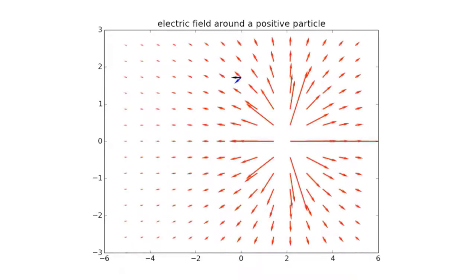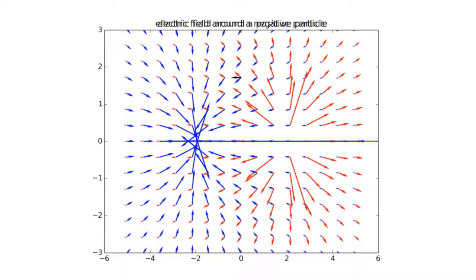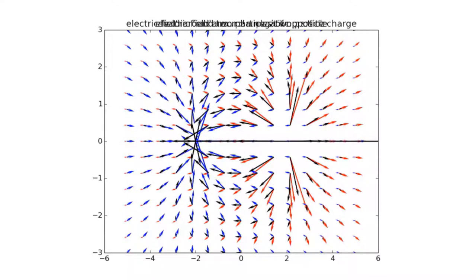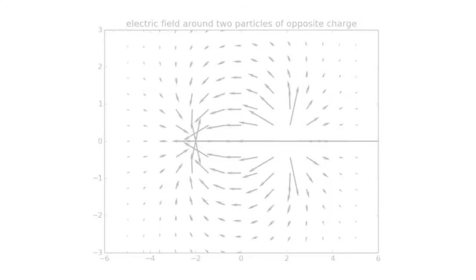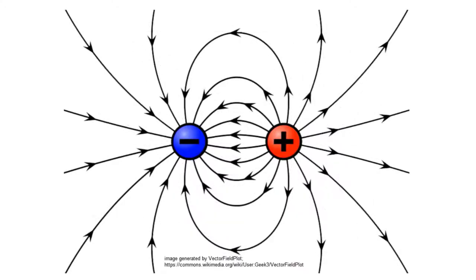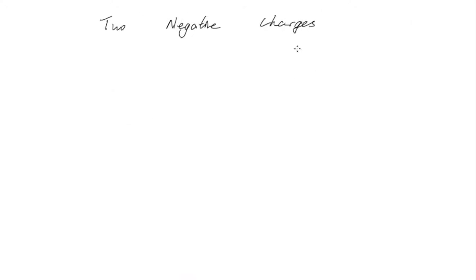Now we do this for all points around the charges and we get the electric field lines surrounding the charges. The vector field representation of electric fields can be confusing to look at and understand at a glance, which is why we also use a field line representation. The field lines are actually constructed from vector addition of the electric fields of individual interacting particles. Looking at the force a positive particle will experience, except this time we have two negative charges.